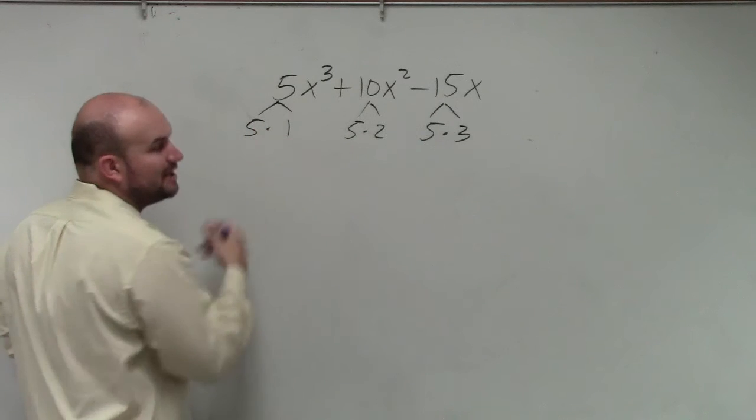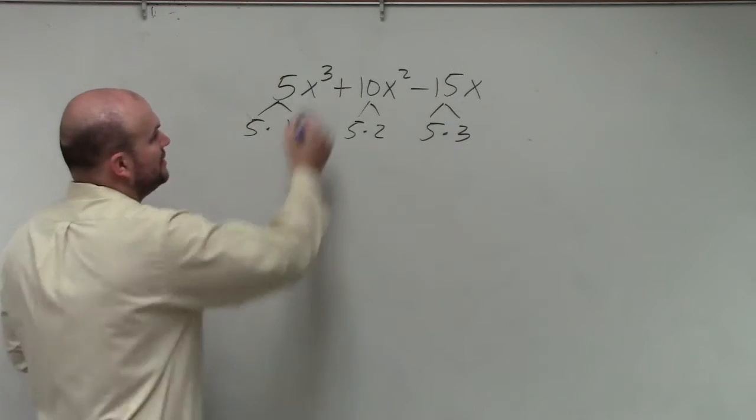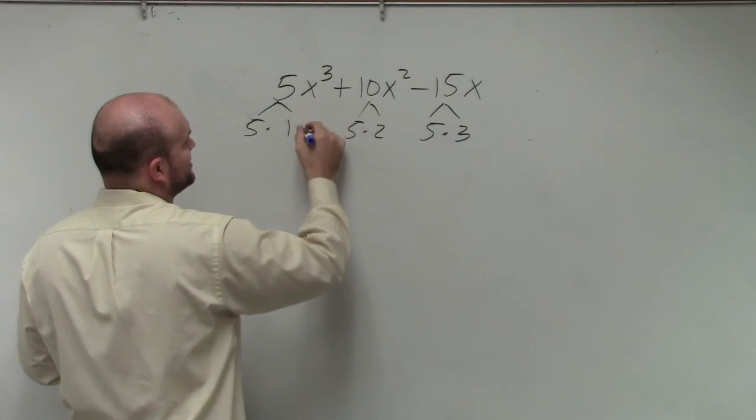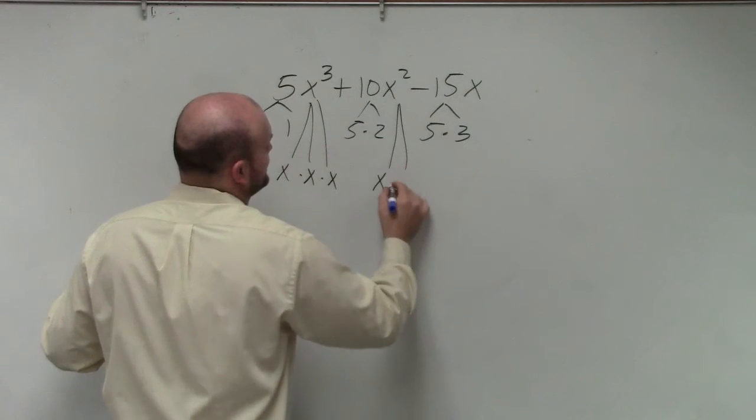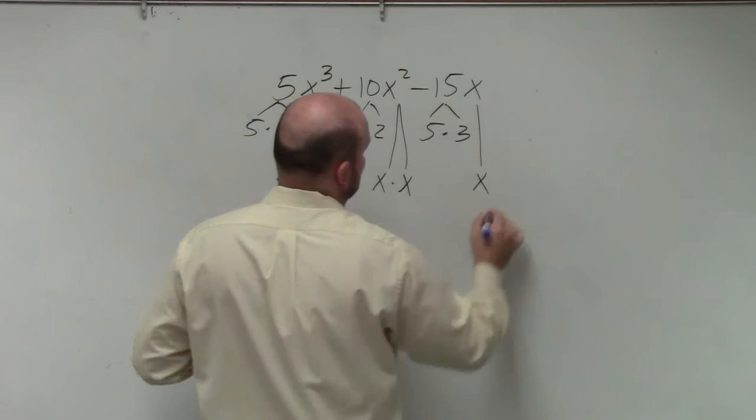We broke them down into linear factors, correct? And you guys could see that this could be broken down into x times x times x. That could be broken down into x times x. And that's just basically x.